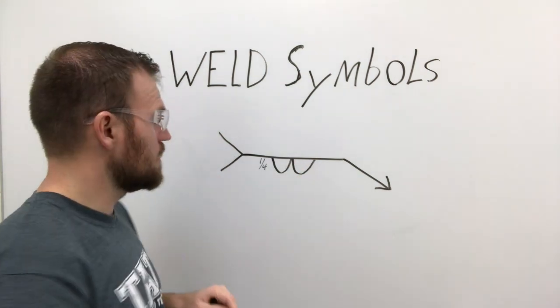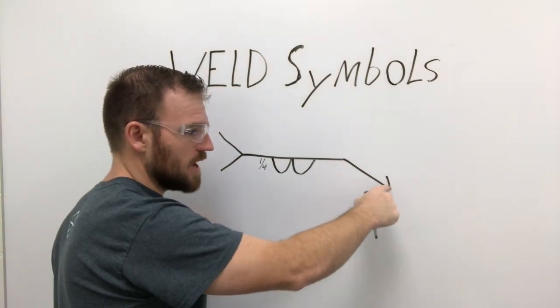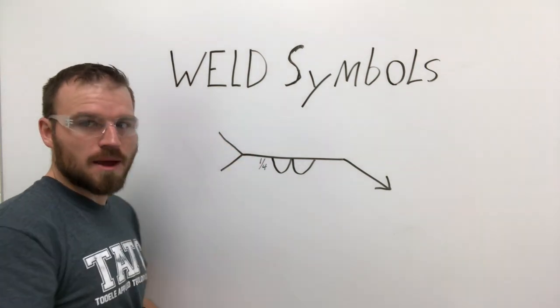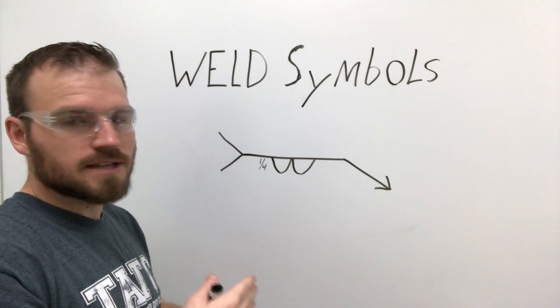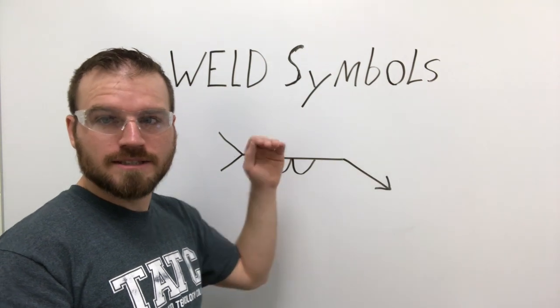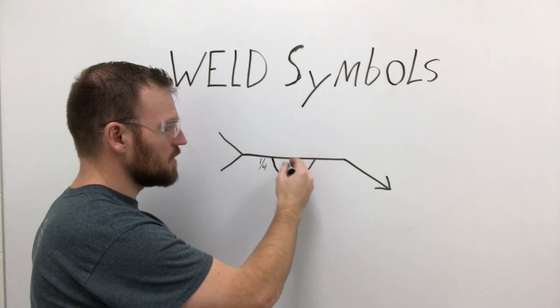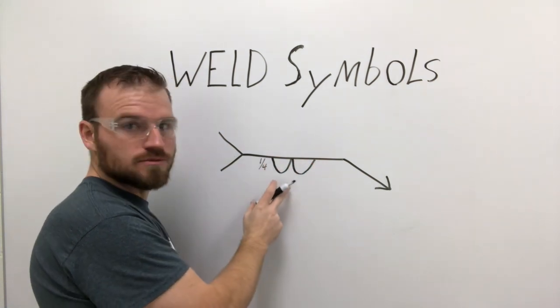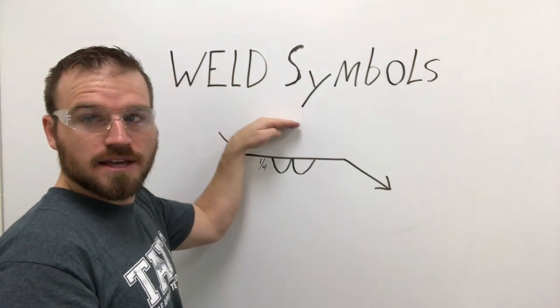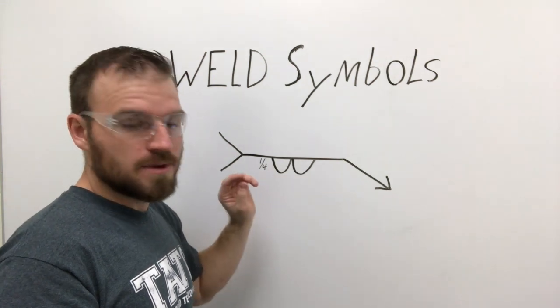So just remember that this line going across is your reference line. This line going down with the arrow on it is the arrow or the leader. The tail right here is the place that you might put notes, WPSs, things like that, or something indicating to go somewhere else. It also could tell you to go look at another weld symbol. Remember, we're going to put our actual symbols for each weld on that reference line. The top side is the other side, and the bottom side is the arrow side. The arrow side is going to be whatever side the arrow is pointing to.